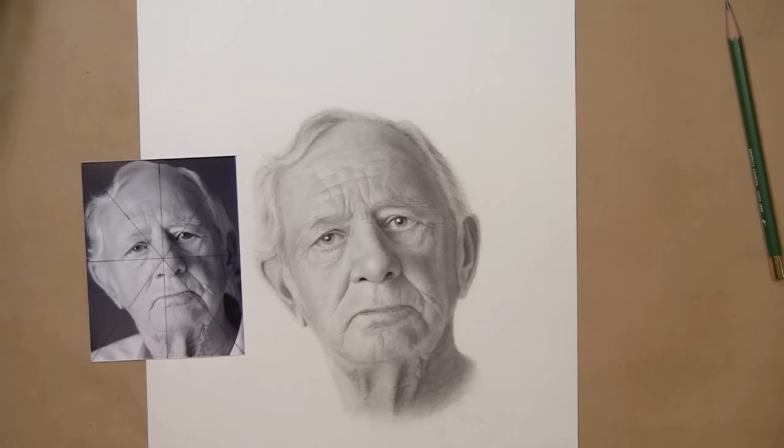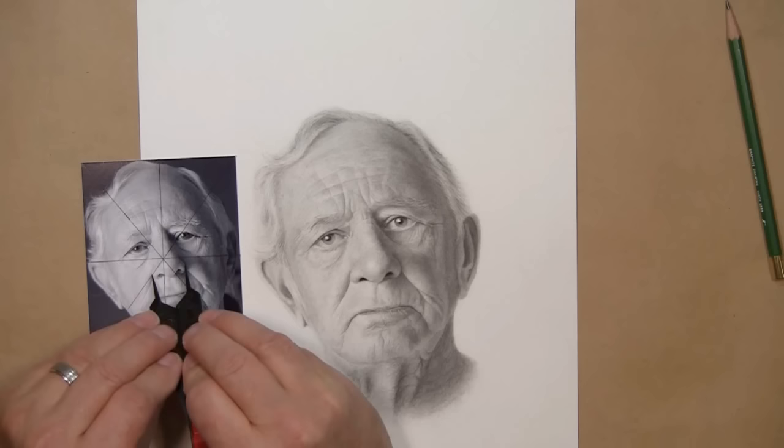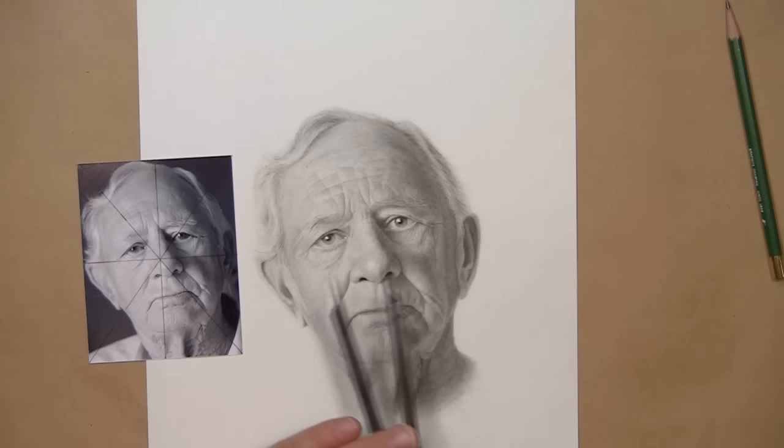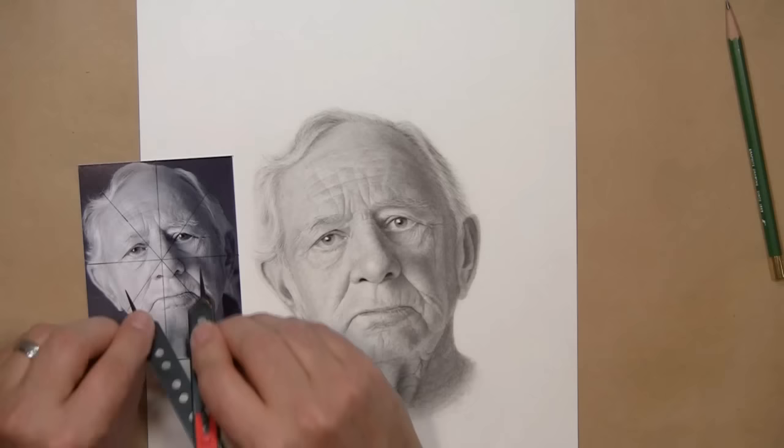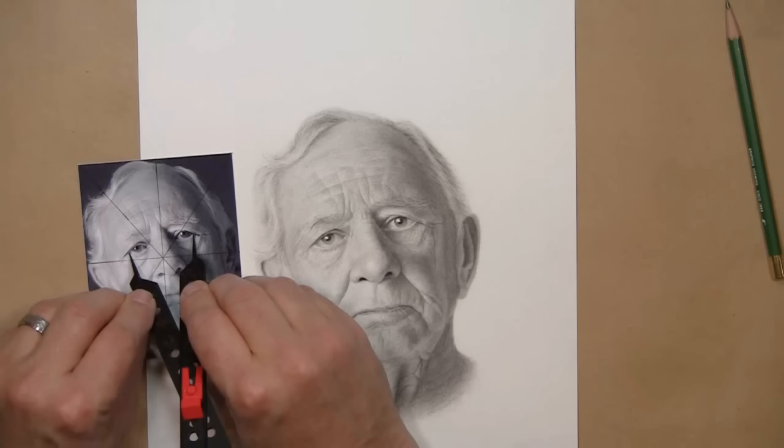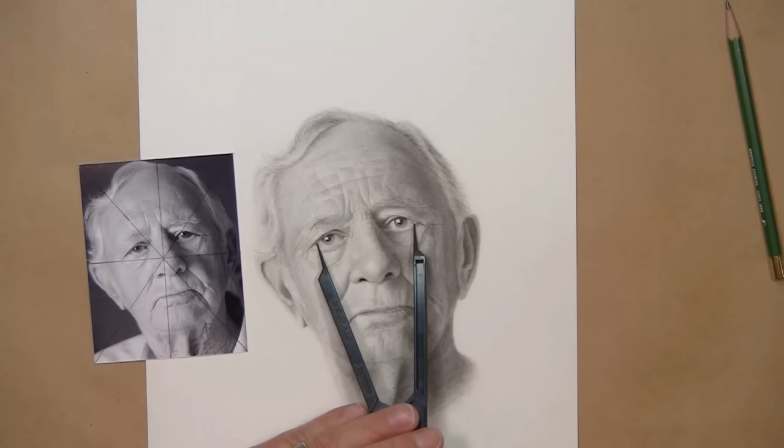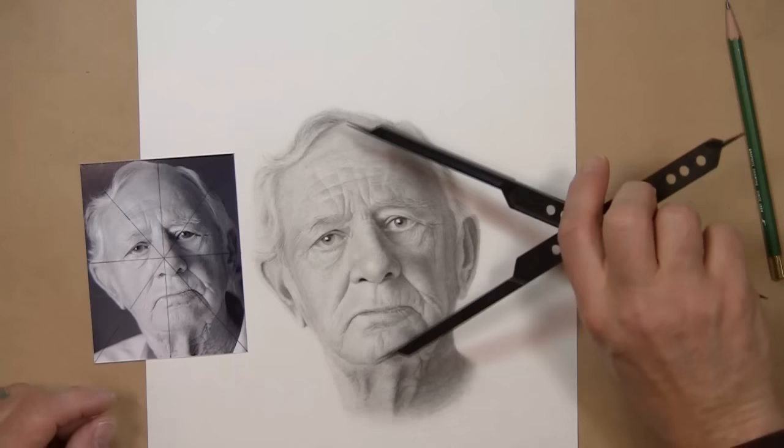Now you can use this method to just double check your measurements as well. So I want to look here how wide his nose is in my reference photograph. Flip over the divider. That looks about right. Let's check the width of his eyes here. Flip this around and I see I have the width of his eyes correct. So this is a great way to double check when things aren't quite looking right. If you just want to draw freehand and don't want horizontal or vertical or diagonal lines in there, you can use this proportional divider to help you double check your work.